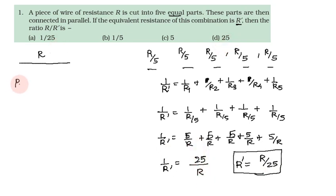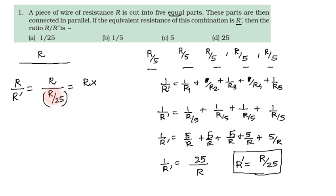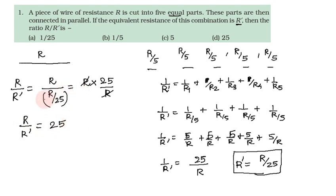The ratio R by R' equals R divided by (R by 25), which equals R multiplied by 25 by R. The R cancels, giving R by R' equal to 25. So the answer is 25.